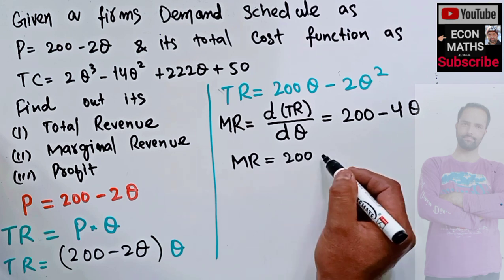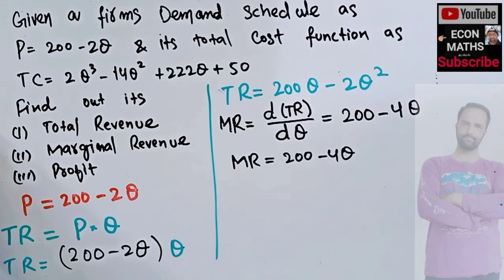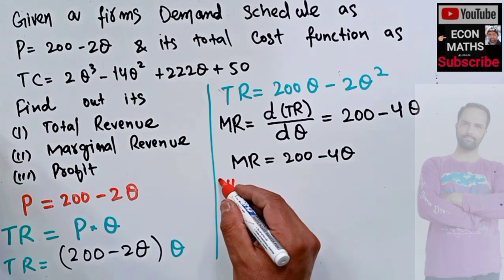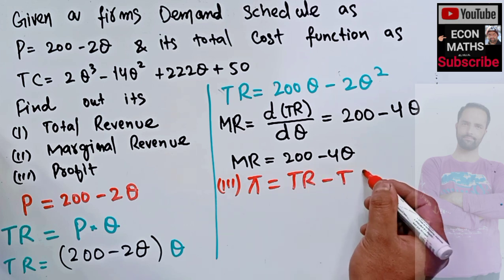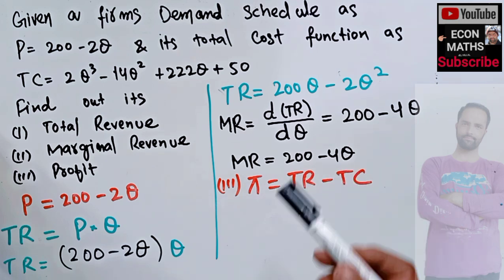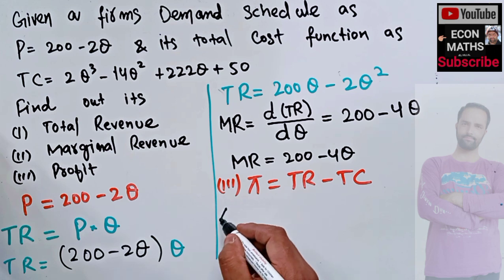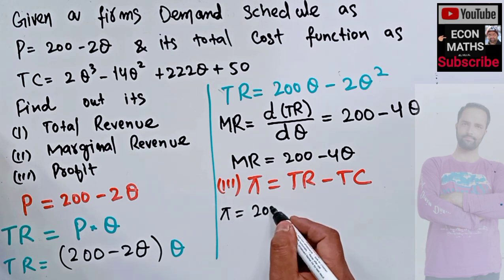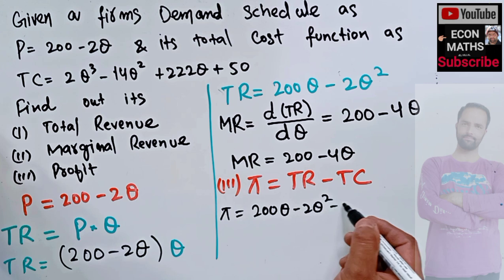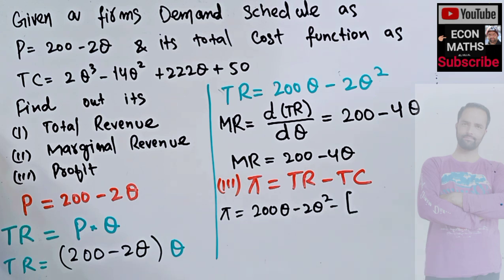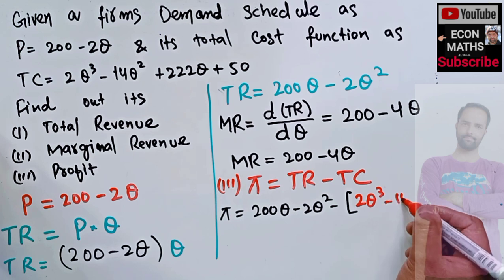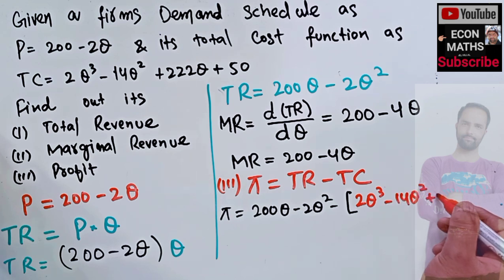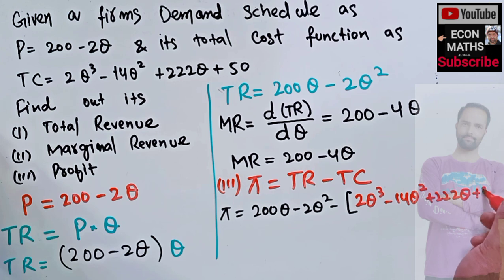Next is to find out the profit. We know profit equals total revenue minus total cost. Total revenue we calculated is 200q minus 2q squared. From this we subtract the total cost function given as 2q cubed minus 14q squared plus 222q plus 50.